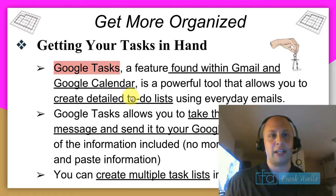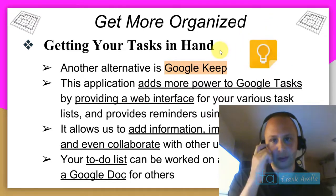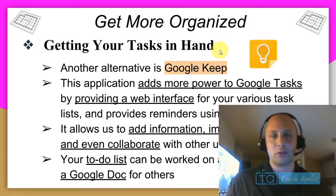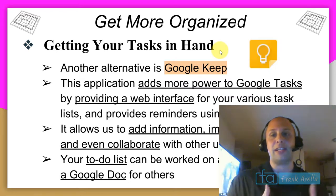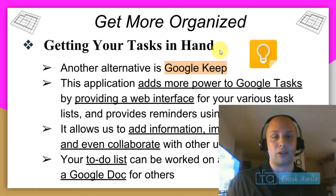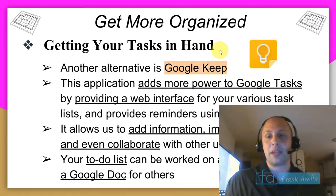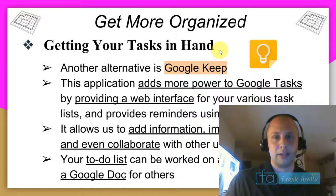An alternative is Google Keep — represented by that little lightbulb icon. Google Keep is more powerful than Google Tasks because it has a web interface, you can download the app on your phone, you can add images (which you can't in Google Tasks), and you can collaborate with others. Your to-do list can also be shared through a Google Doc.